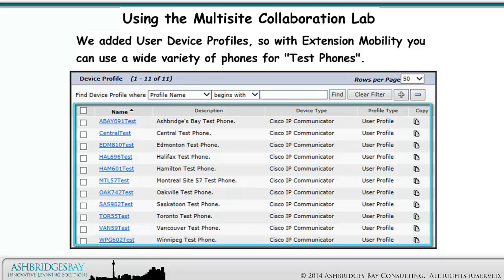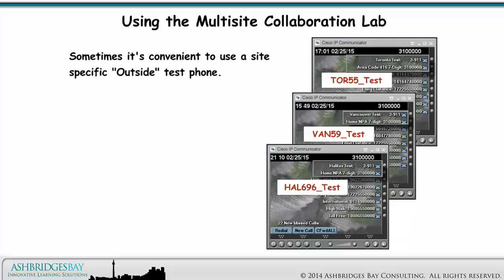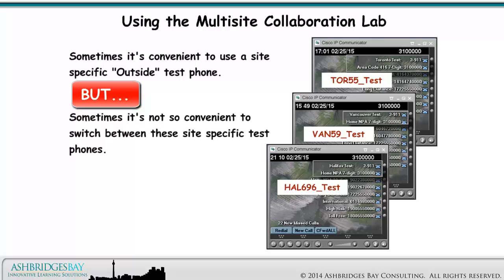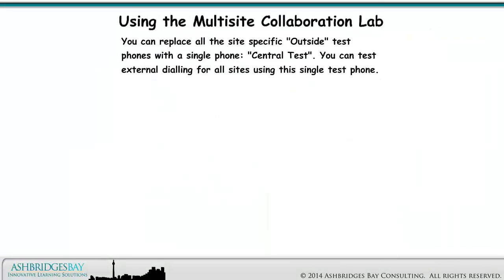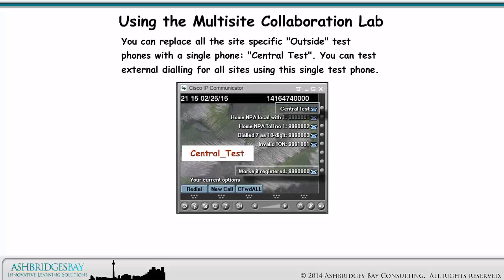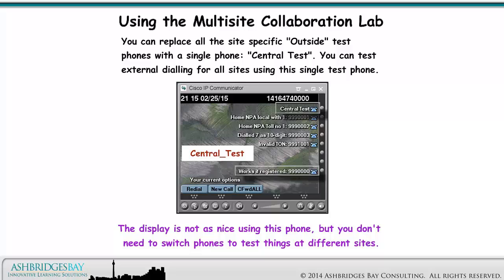We added user device profiles, so with extension mobility, you can use a wide variety of phones as test phones. Sometimes it's convenient to use a site-specific outside test phone, but sometimes it's not so convenient to switch between site-specific test phones. You can replace all the site-specific outside test phones with a single phone, Central Test. You can test external dialing for all sites using this single test phone. The display is not as nice, but you don't need to switch phones to test things at different sites.